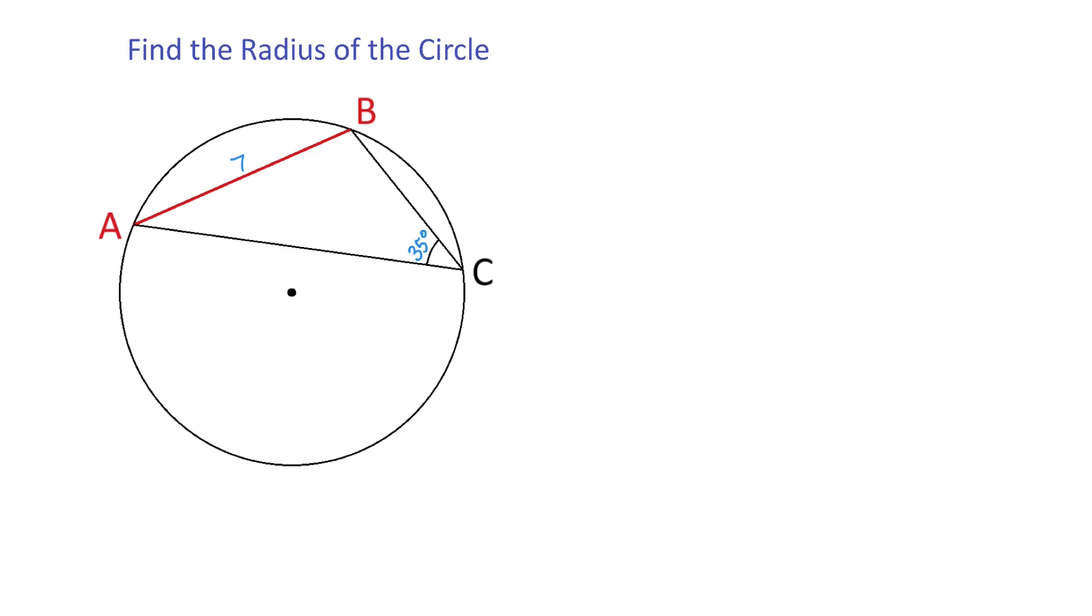To find the radius from point A or from point B, we will draw the diameter of this circle. I will draw the diameter from point A.